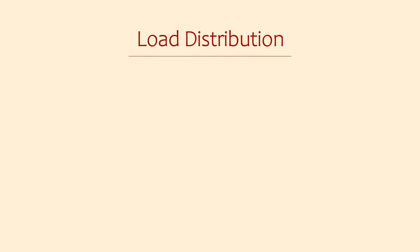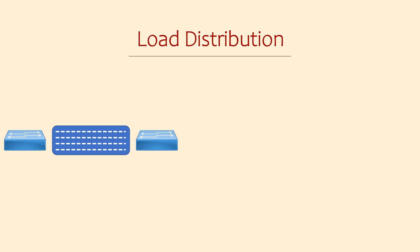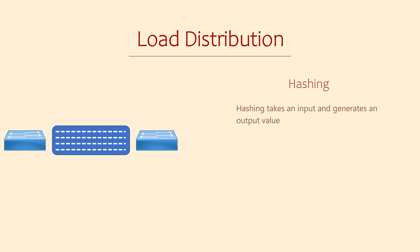Let's talk about how switches distribute load across the physical links in an EtherChannel. For our example, we're going to assume that there are four physical links. The way this works is a bit complicated and can depend on the model of switch you're using, but it essentially comes down to a process called hashing. A hashing algorithm takes any input and generates a fixed value as an output — a bit like a signature that represents the original data.